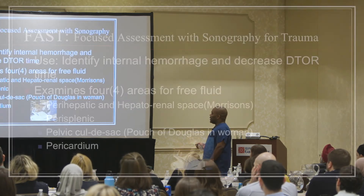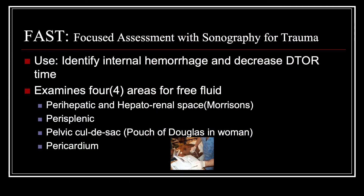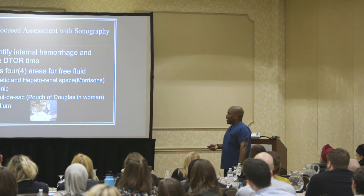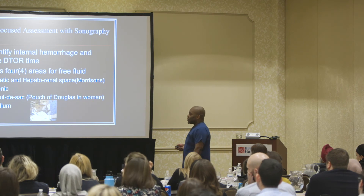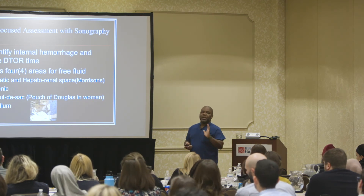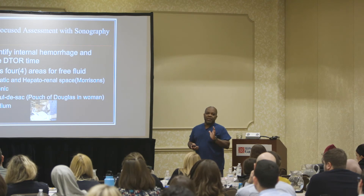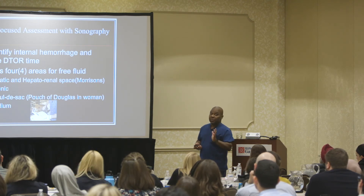The FAST exam — Focused Assessment with Sonography for Trauma — replaced something called DPL, diagnostic peritoneal lavage. Back in the day, they would shove a giant needle below the belly button, dump 500 cc to a liter of fluid in the abdomen, then flip it back out and if it turned red, you're positive — then go to the OR an hour later. The FAST exam, done properly, can be completed in about a minute, 45 seconds if you're really good.